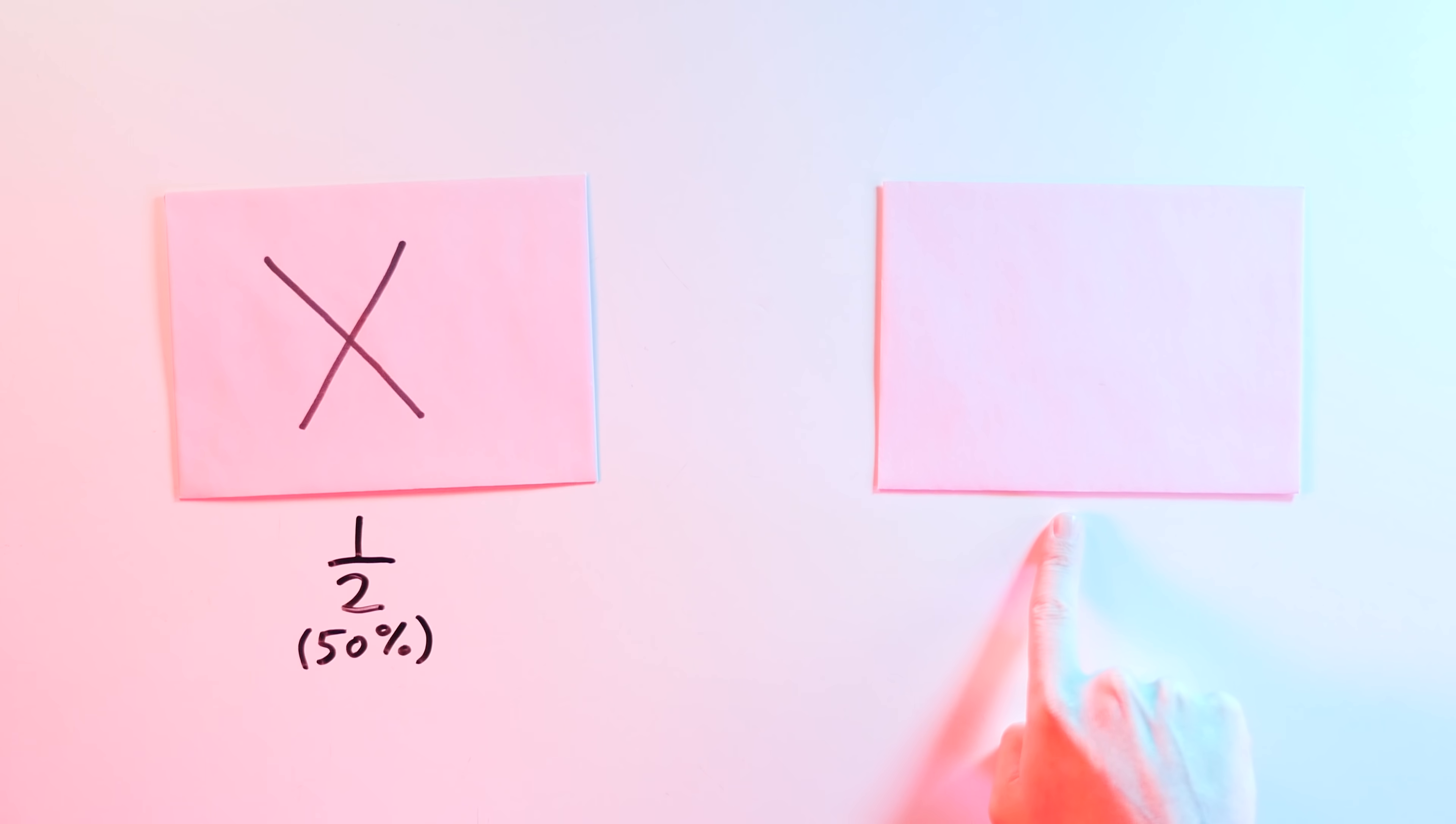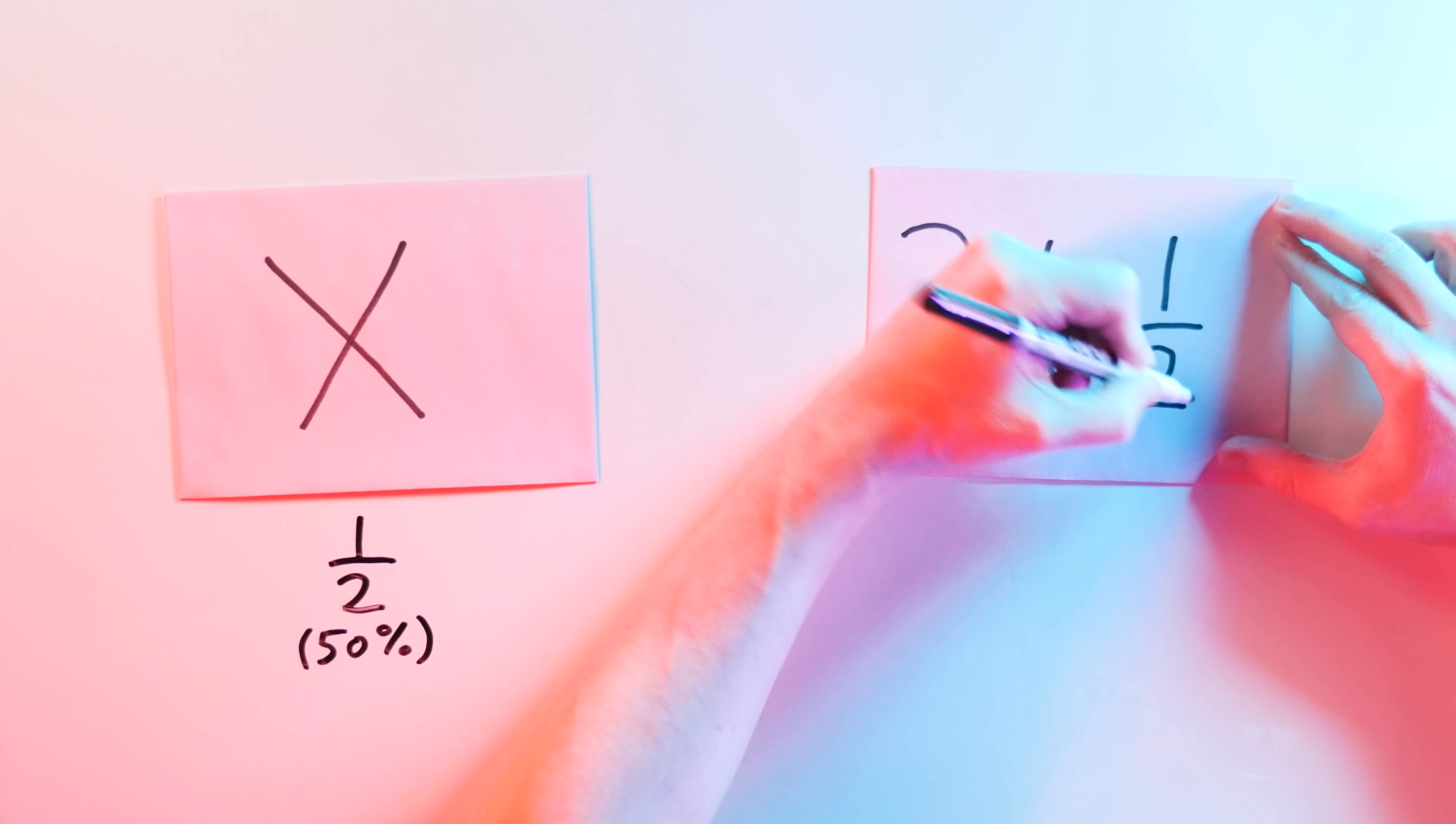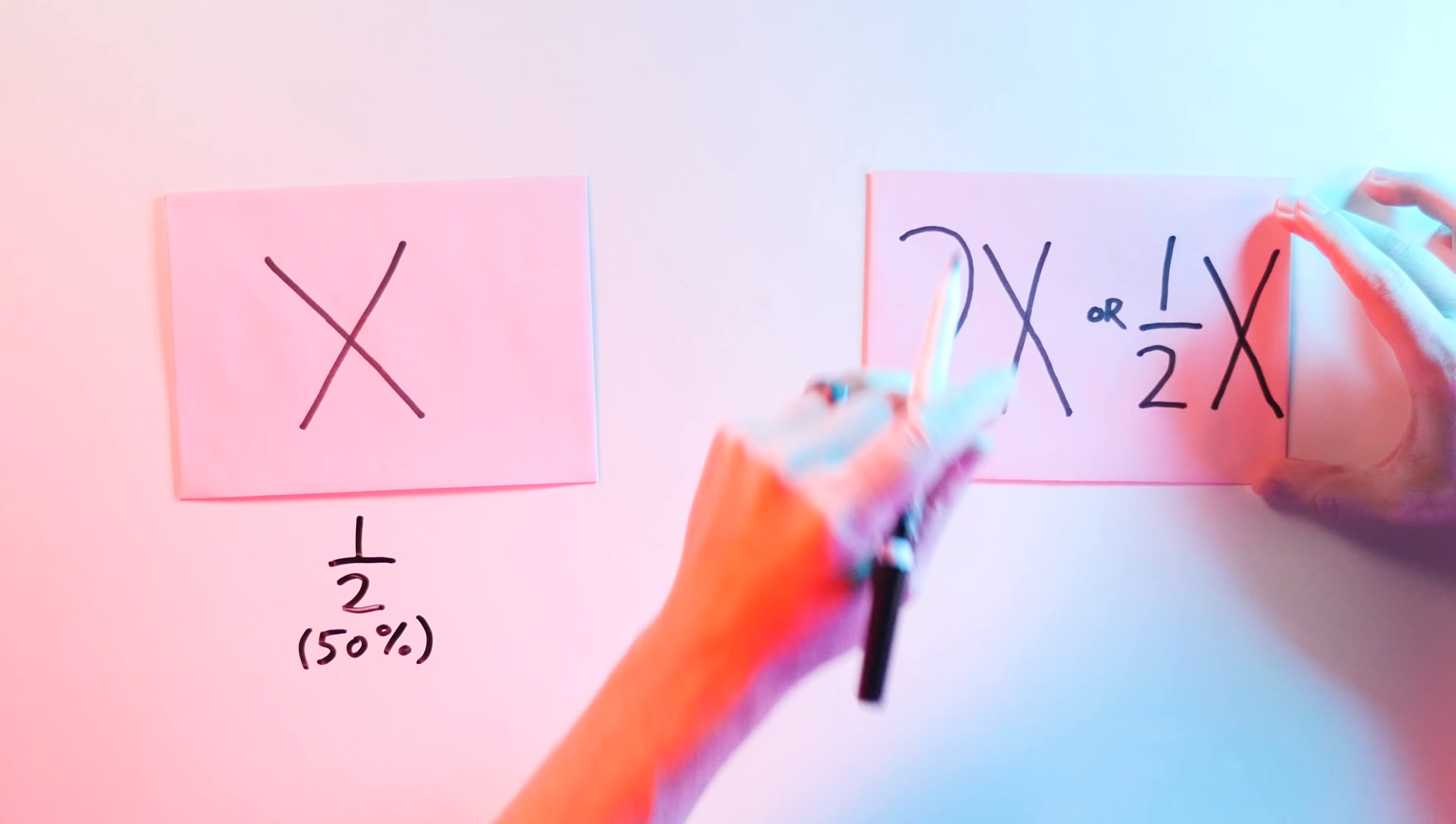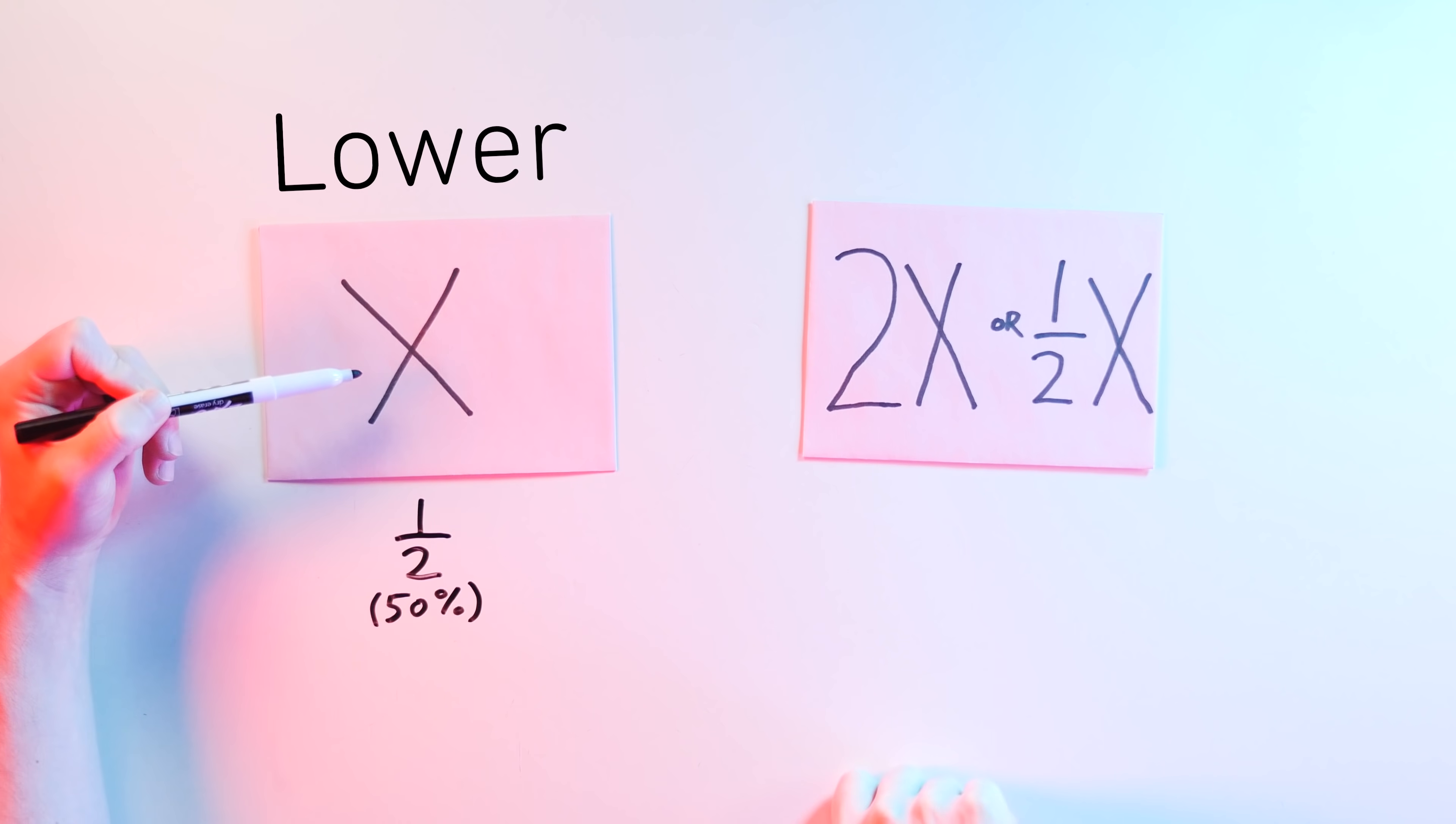The probability of that envelope containing the smaller value is 1 half. And the probability of it containing the larger amount is 1 half, is 50 percent. The other envelope either contains twice that amount, 2X, or half that amount, 1 half X. If X turns out to be the higher value, then the other envelope contains 1 half X. If your envelope X is the lower value, then the other envelope contains 2X. Make sense?